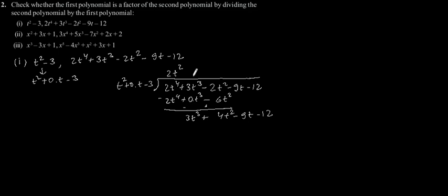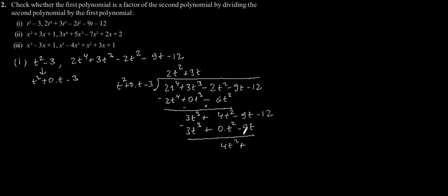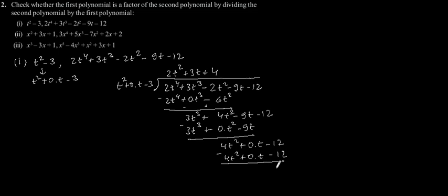Now by multiplying plus 3t with the divisor we will get 3t³ plus 0t² minus 9t. By subtracting it we will get 4t² plus 0t minus 12. Now by multiplying 4 with the divisor we will get 4t² plus 0t minus 12. By subtracting this, the remainder will be 0.